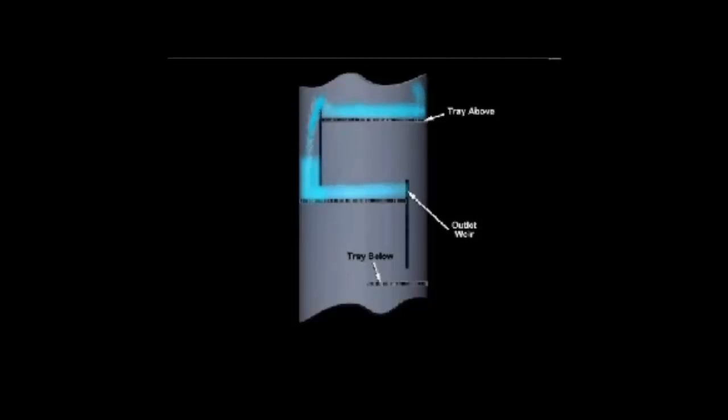An outlet weir on the other side of the tray maintains a certain liquid depth on the tray. The bubbling area includes the tray area from the downcomer apron to the outlet weir. This is the area on the tray where the liquid and vapor come in contact.